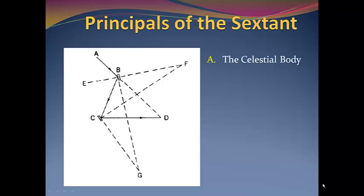A represents the incoming light of the celestial body being reflected to B, the index mirror, that is moved into position to receive the light of the celestial body, which is sent to C, the horizon mirror.